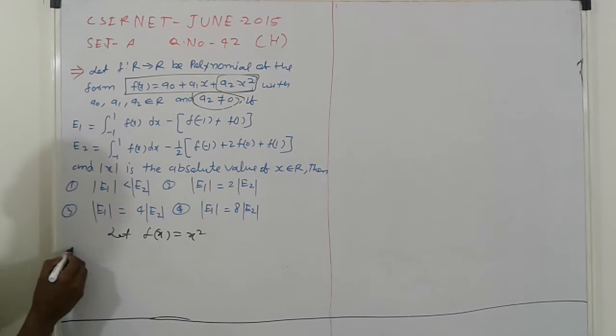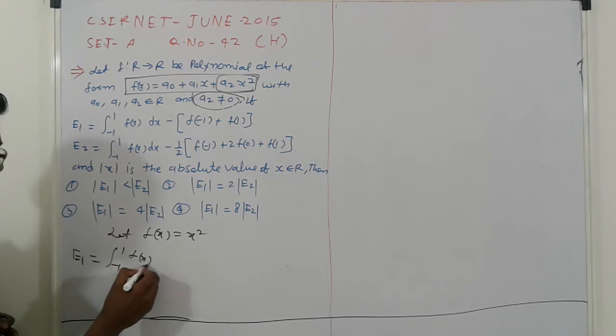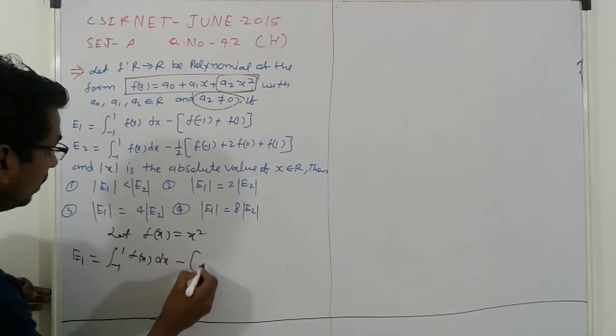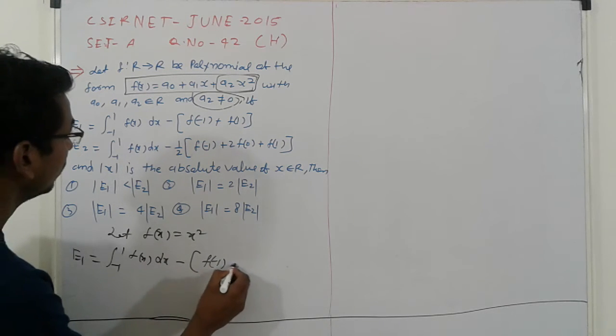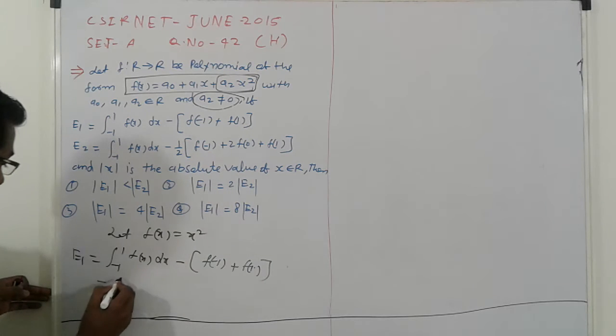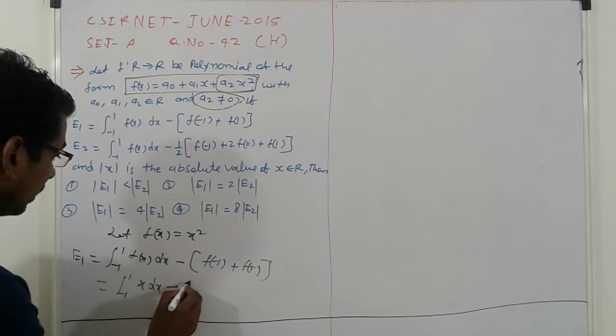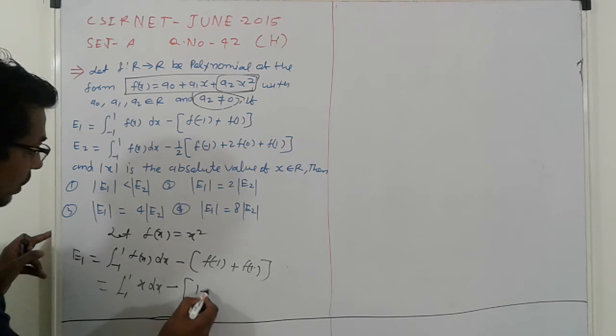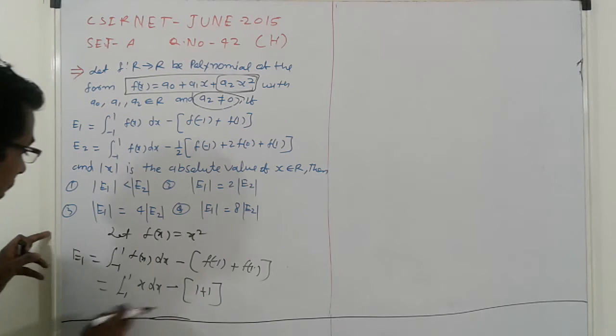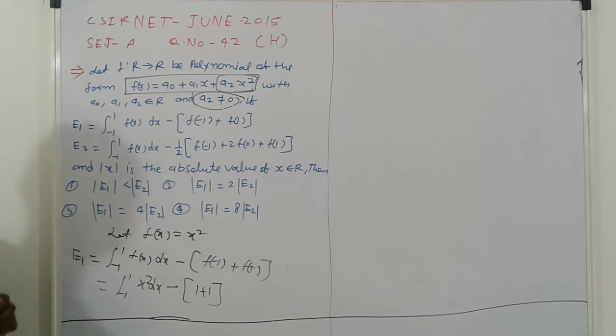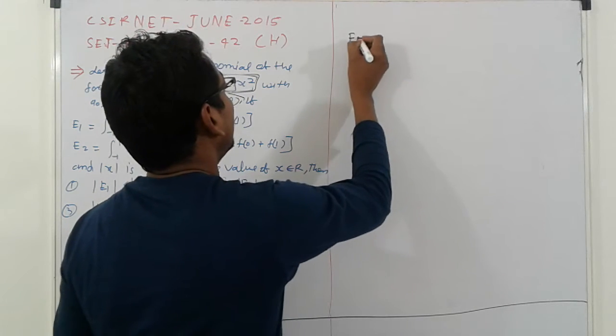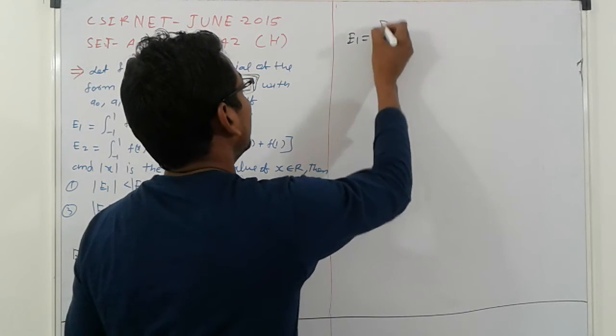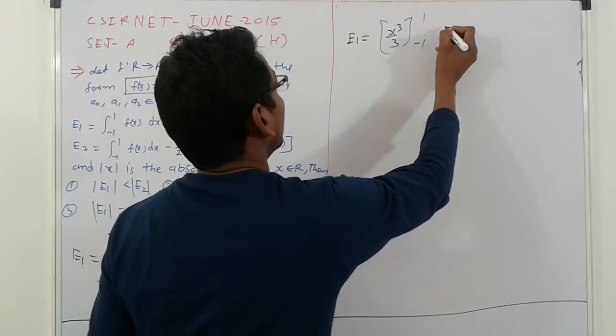What is the value of E1? E1 is integral from -1 to 1 of f(x)dx minus f(-1) plus f(1). So this is integral -1 to 1 x squared dx minus (-1 squared plus 1 squared). That is x cubed by 3, E1 equals x cubed by 3 from -1 to 1 minus 2.